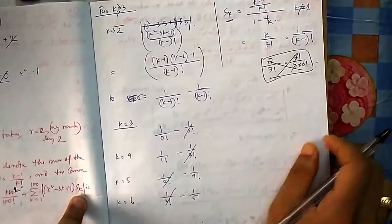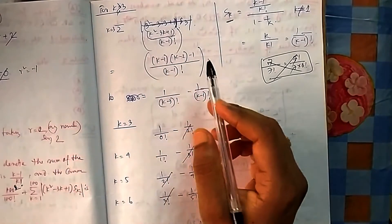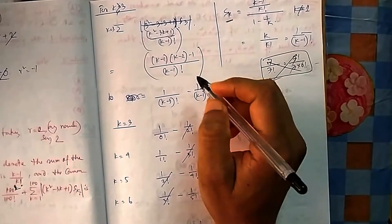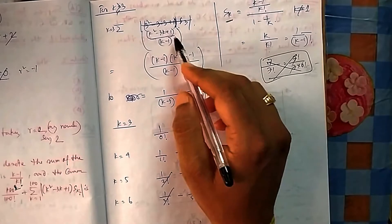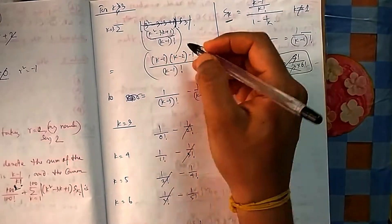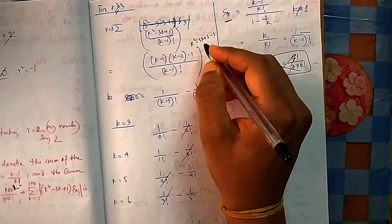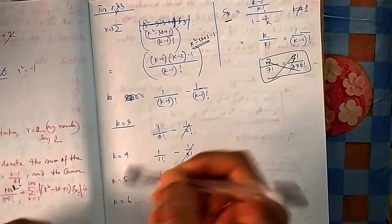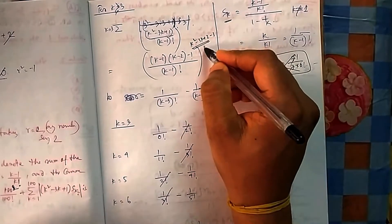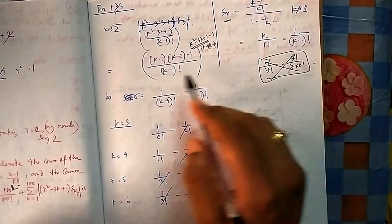We need to factorize k²-3k+1. We rewrite it as (k²-3k+2) - 1 = (k-1)(k-2) - 1. The advantage of this approach is that factors (k-1) and (k-2) can be cancelled with (k-1)! in the denominator. That's why we split it this way. So the expression becomes [(k-1)(k-2) - 1] / (k-1)!.